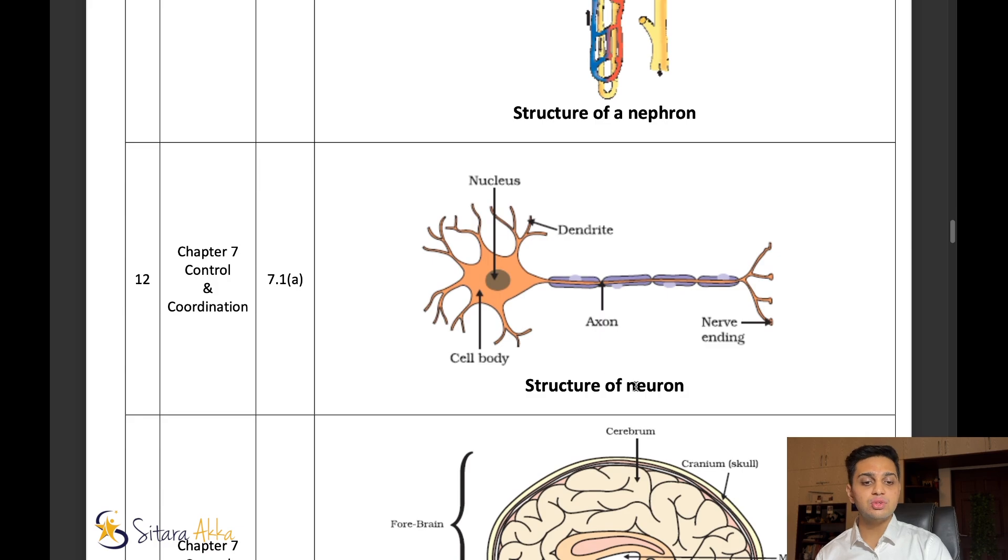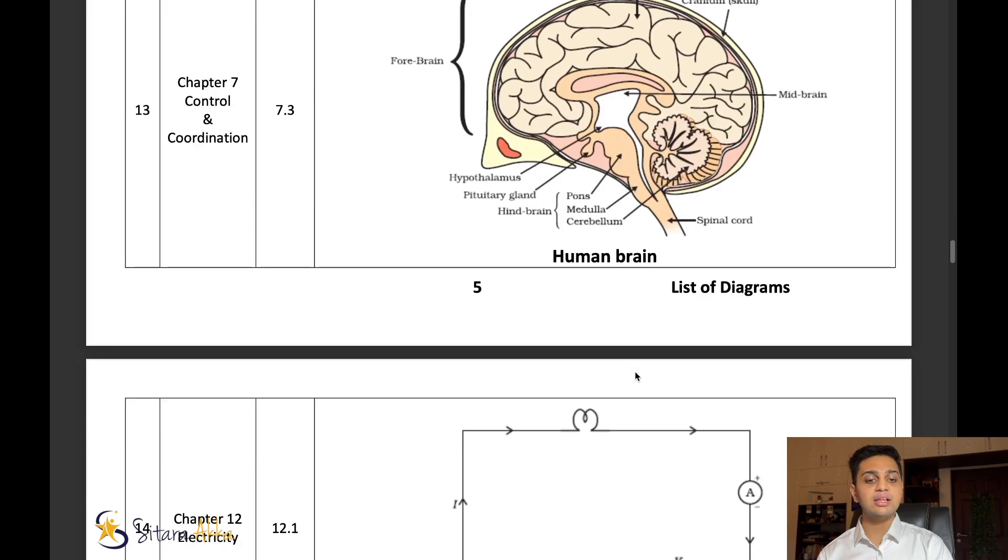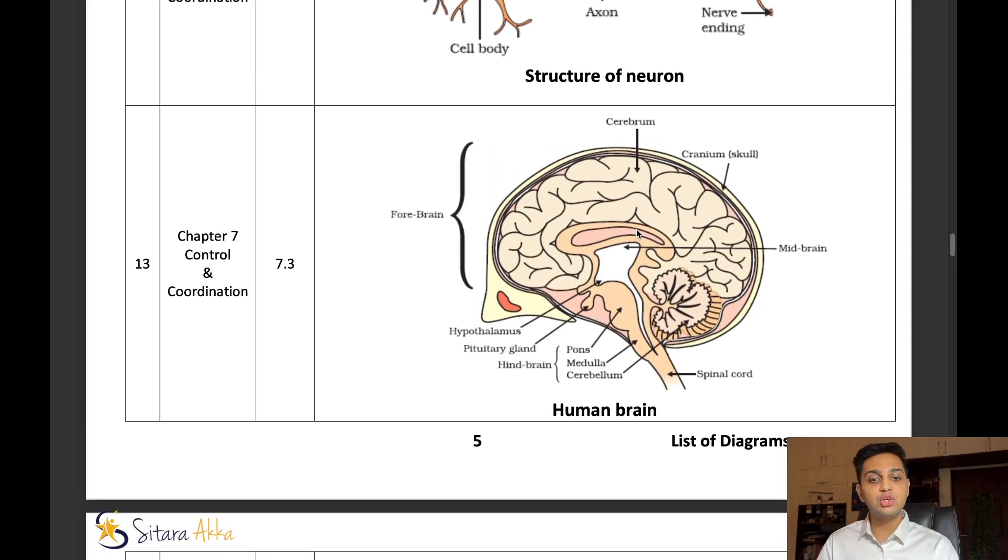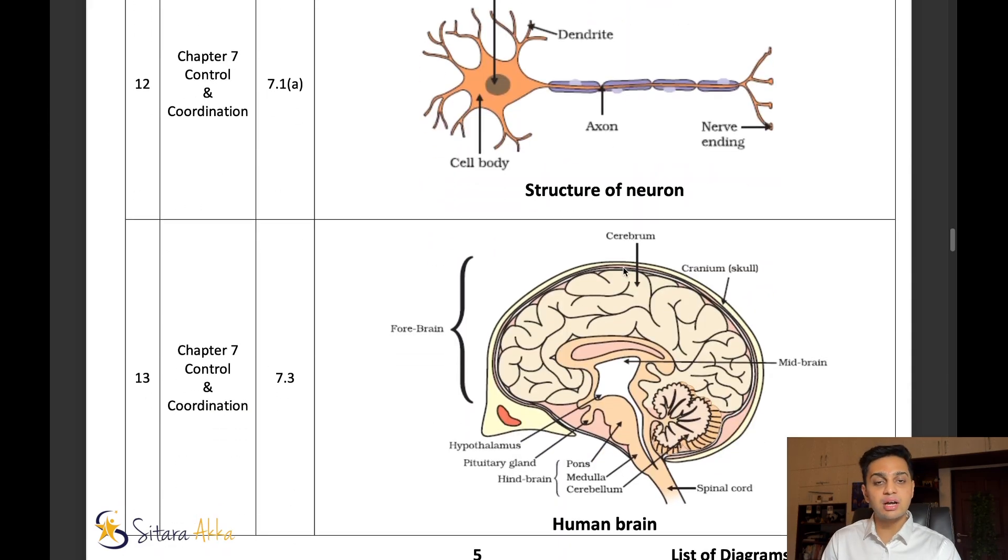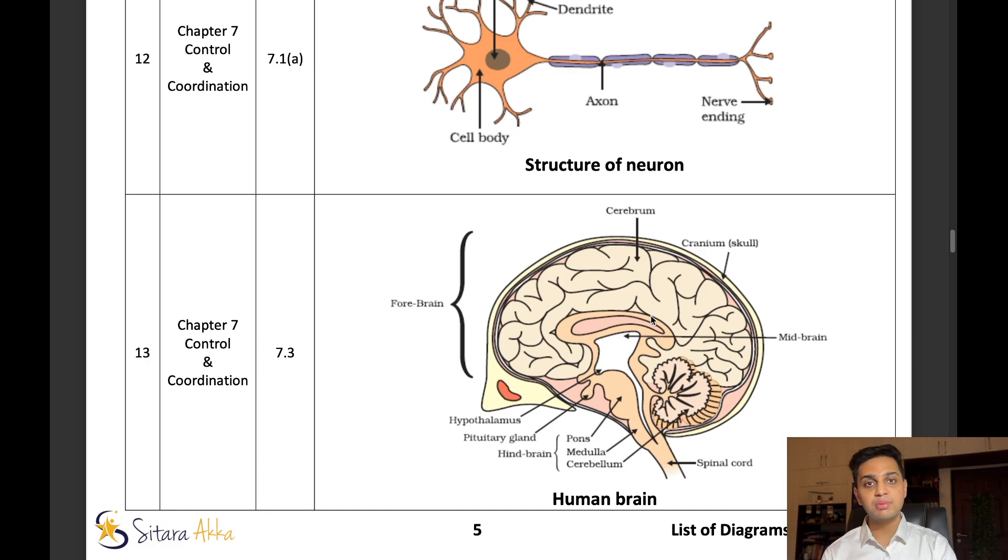Next, structure of neuron. This is an easy diagram but also very important for this chapter. And the last one, human brain. Very, very important diagram. Again, human brain, heart, alimentary canal, and structure of the nephron - these are the most important diagrams. Understand these diagrams properly and draw them properly. If it is too complicated or too detailed, you can draw a little simpler diagram. If you want help drawing these diagrams, you can always message us on WhatsApp. If you want this resource code, you can message us on WhatsApp, and we will help you with it.